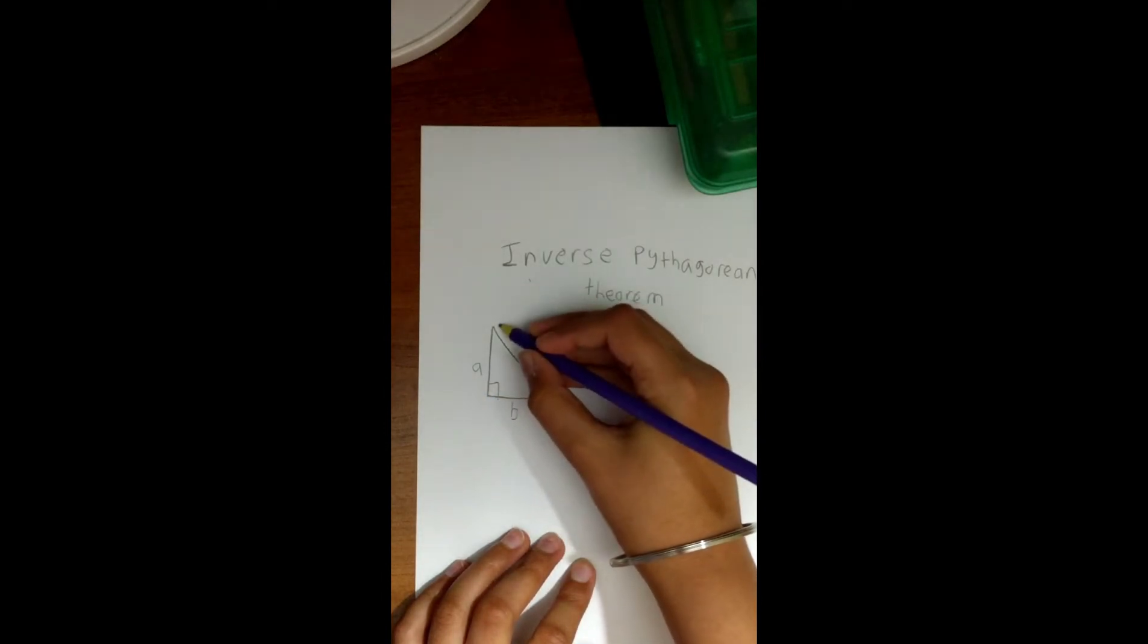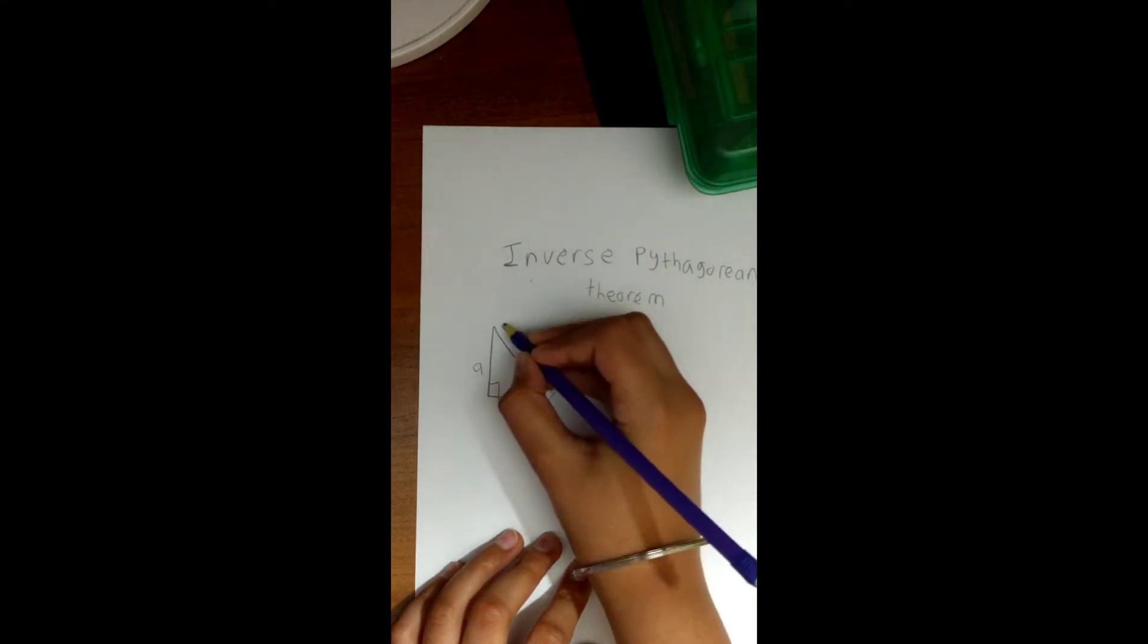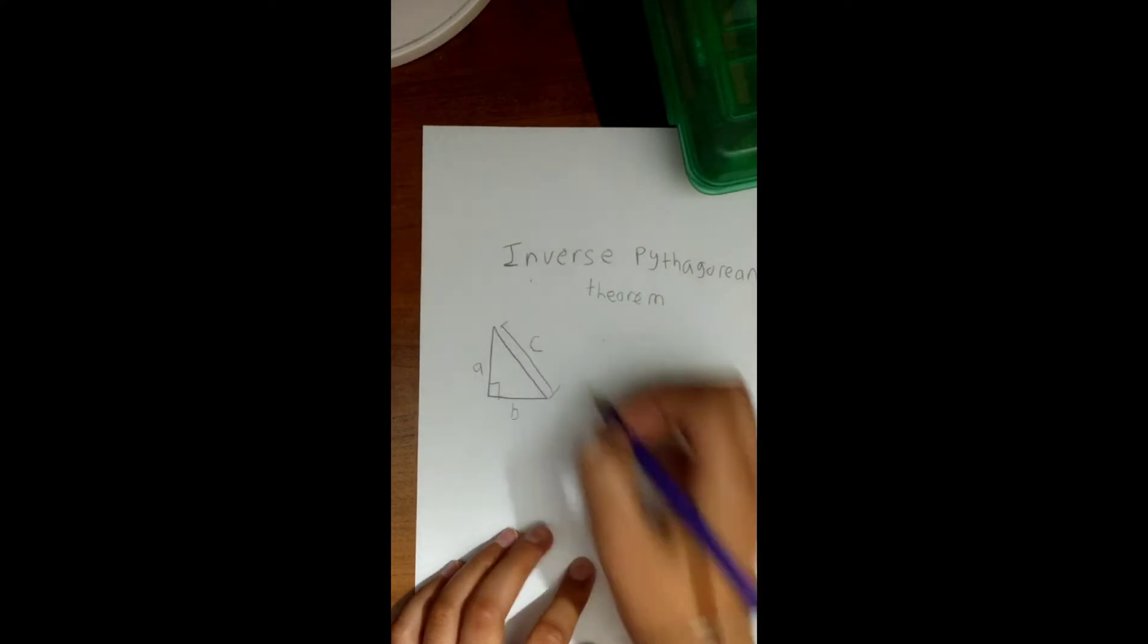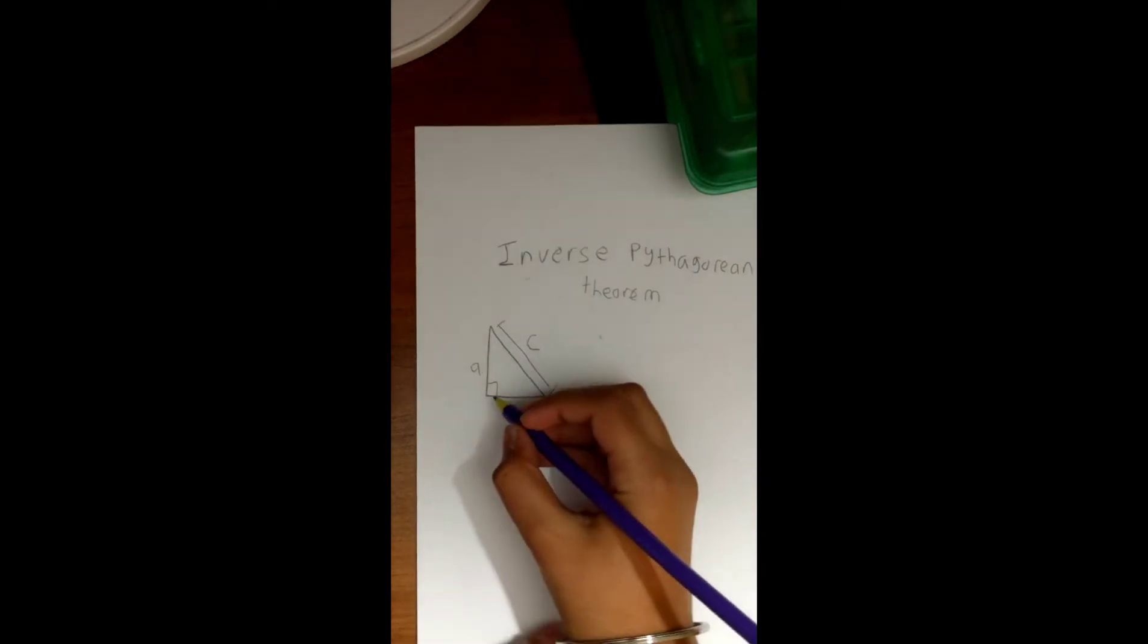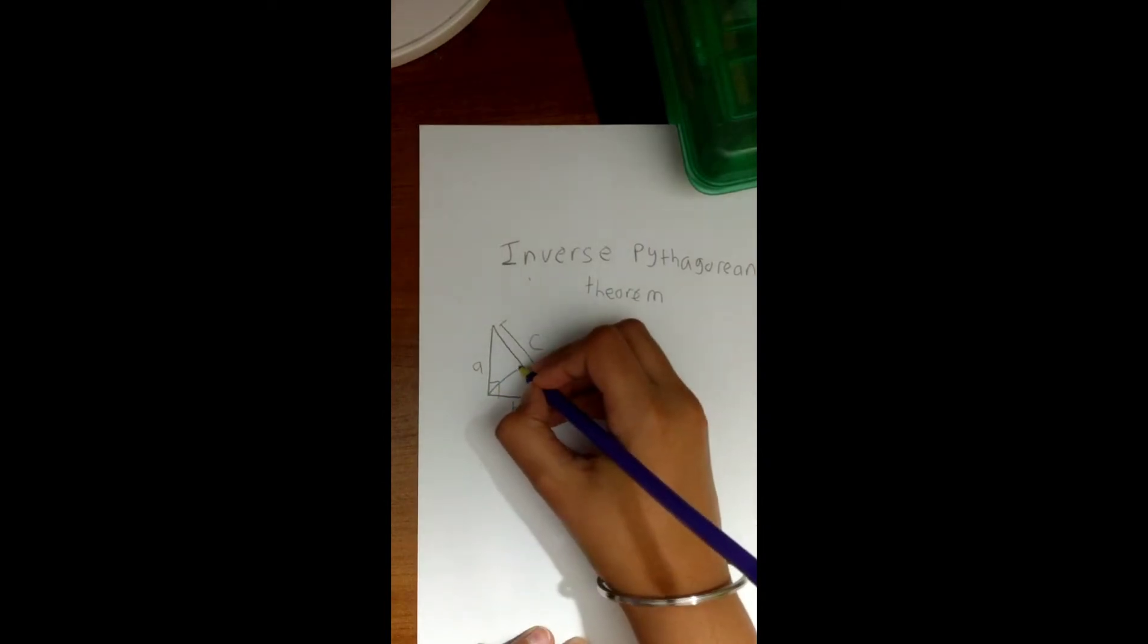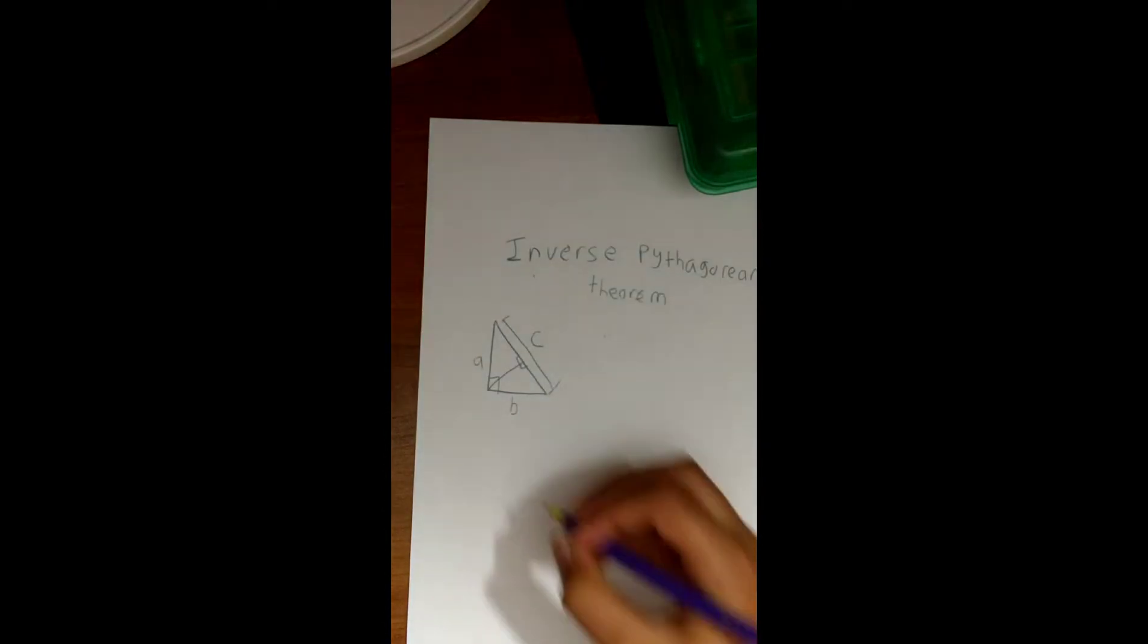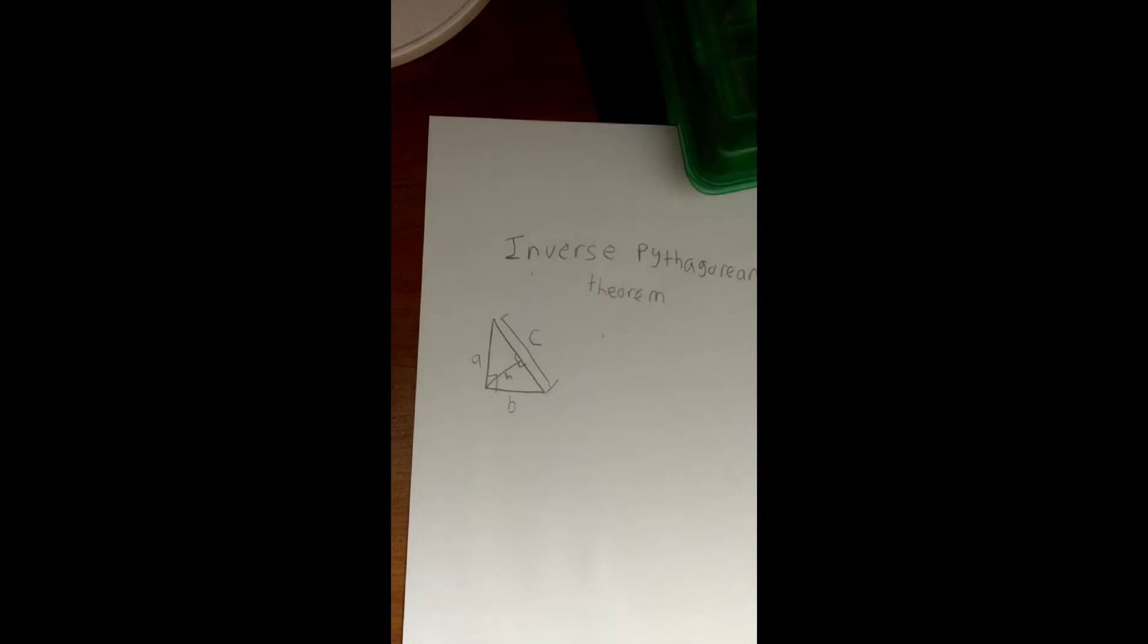And let's call this side length a, let's call this side length b, let's mark this as a right angle, and let's call this whole side length c. Now if you drew the altitude of leg c, such as like this, and it formed two perpendiculars like this, and if you were to call this h...